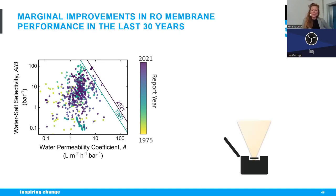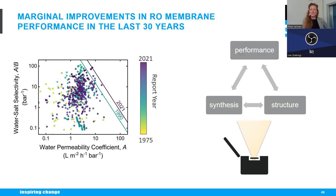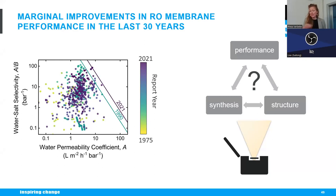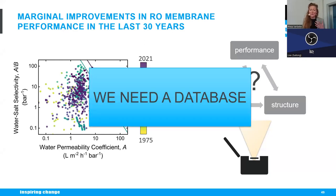Why has membrane performance not improved significantly? Because we don't really understand which factors govern membrane transport — the synthesis-structure-performance relationships — and how we can maximize them. We are essentially using a trial-and-error approach. The argument is that we need data, we need a database. This was my first motivation in 2020, and there is also a second motivation: to increase resource and time efficiency.